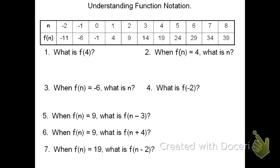Now, if you look at problems number 1 and 2, at first glance they look pretty similar, but they're asking for very different things. Number 1 says f of 4. This basically is asking, what is the output when the input is 4? Versus number 2, when it says f of n equals 4, what is n? This is saying, if the output is 4, what input or n value generates that output?